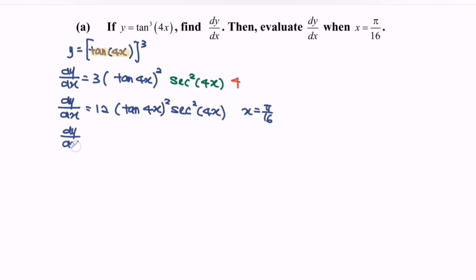So dy dx is equal to 12, multiply with the tangent 4x. Substitute the x, pi over 16 and we will have tangent pi over 4 which is 45 degree, second square bracket pi over 4.